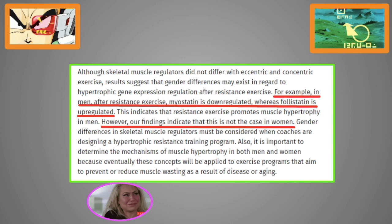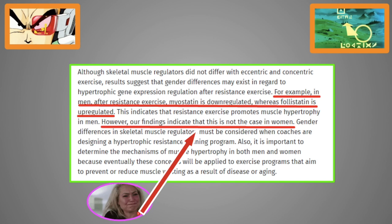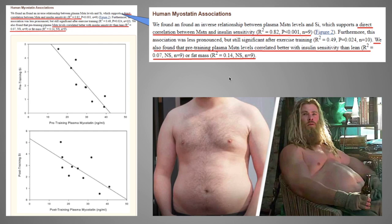And several other studies confirm this. As you can see here, one of the main reasons why women cannot get as big as men, even if you inject them with testosterone, is because their myostatin activity is way too high. Myostatin is also responsible for insulin resistance.